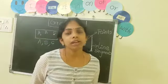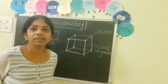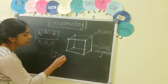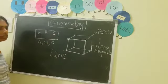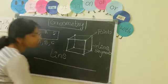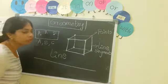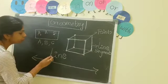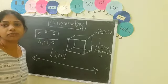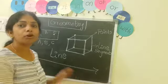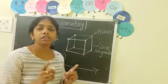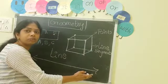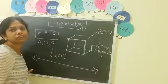Now I will tell you about a line. Line — spelling: L, I, N, E. A line has no starting point and no ending point, children. We don't know where it starts and where it ends, but two points together join to form a line. This is a line — it has no starting point and no ending point.